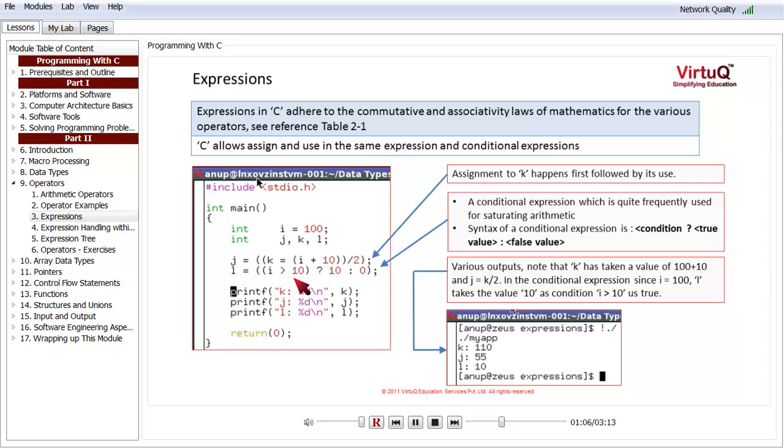The value of l has been assigned using a conditional expression. The conditional expression syntax is: first of all there is a condition, then question mark, and the value to be assigned or returned if the expression evaluates to true, then colon, followed by the value to be returned if the expression evaluates to false. l is going to get a value in the end which is going to depend on the condition i greater than 10 or not.